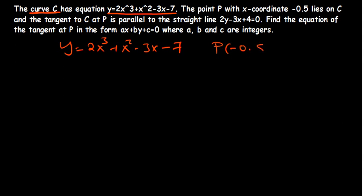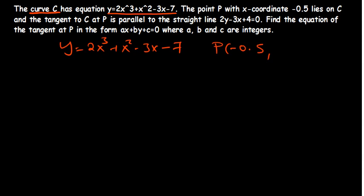First, I need to find the y-coordinate in advance because it will be needed as we proceed. The y-coordinate uses the equation of the curve — plug in the value of negative 0.5 at every x. After plugging in the value, the result I'm getting is negative 8. So we have point P at approximately (negative 0.5, negative 8).